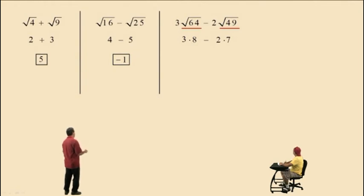Notice we now have 3 times 8 subtract 2 times 7. Now we perform the multiplications before we perform the subtraction. 3 times 8 is 24. 2 times 7 is 14. We subtract. 24 subtract 14 is 10.